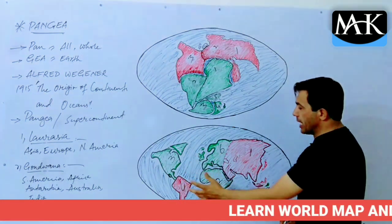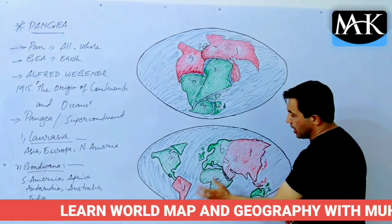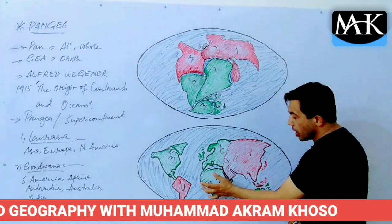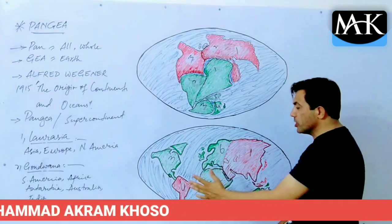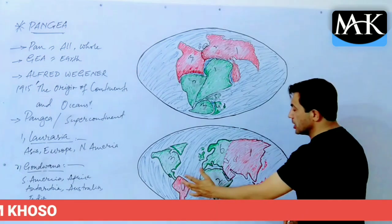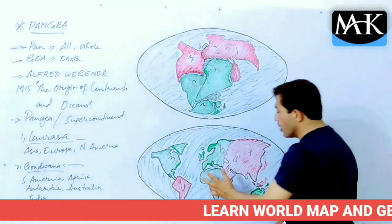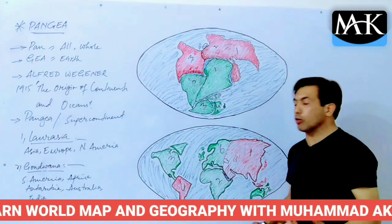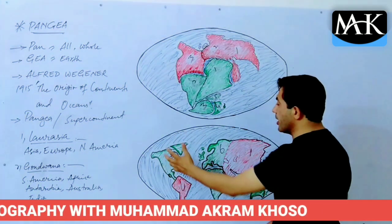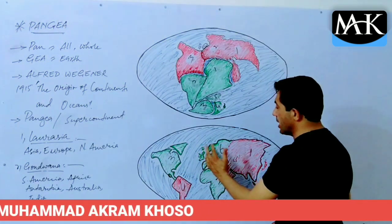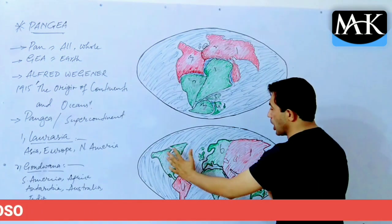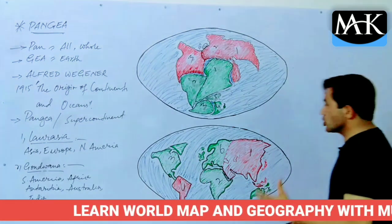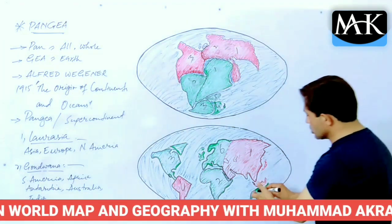When North America and South America separated from Africa and Europe, the Atlantic Ocean formed. If we look at Africa and South America — South America was originally fixed to Africa. Because of the divergence of plates, this land mass separated and is now known as South America. Similarly, North America was originally part of Europe, and because of divergence it became a separate land mass.